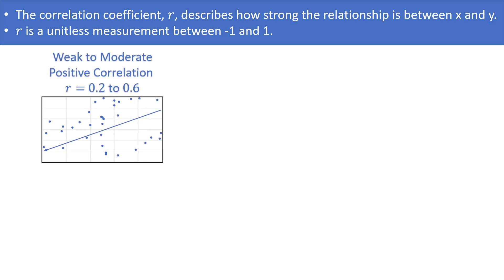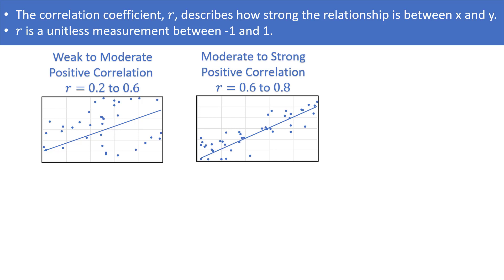Our first example has a correlation coefficient r between 0.2 and 0.6. We would describe this as a weak to moderate positive correlation between x and y. That means an upward sloping line will fit the dots best, but it won't be a great fit — there will be quite a few dots either above or below the line. As r gets closer to 1, the correlation becomes stronger.